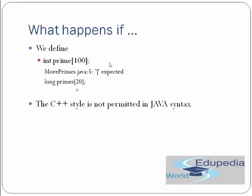Now let's see this: int prime[100]. This will give an error because the C++ style of giving size at declaration is not permitted in Java syntax. You cannot give the size when you just declare the array variable — you can only give the size when you actually create the array using the new keyword. This syntax is invalid in Java.